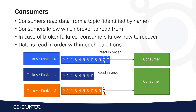It could be reading them at the same time, but from within a partition the data is going to be read in order. But across partitions, we have no way of saying which one is going to be read first or second, and this is why there is no ordering across partitions in Apache Kafka.